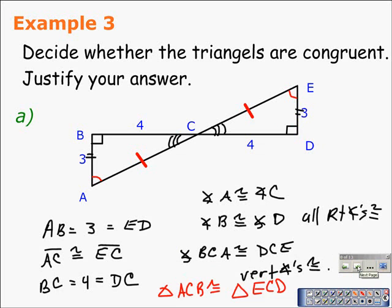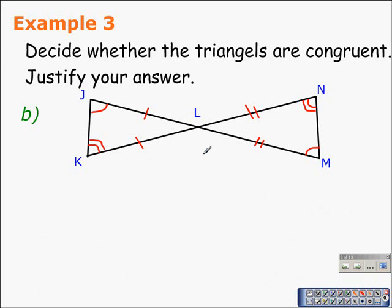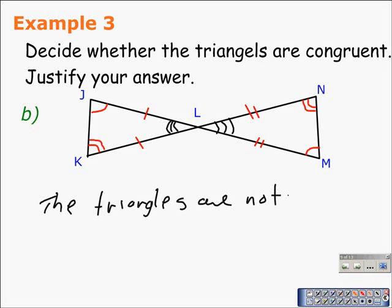In part B of example 3, we need to decide whether those triangles are congruent. We can confirm that three pairs of corresponding angles are congruent: angle J and angle M are marked congruent, angle N and angle K are marked congruent, and angles JLK and MLN are vertical angles and therefore congruent. However, the corresponding sides are not necessarily congruent, so we cannot conclude that the two triangles are congruent. This has been part 1 of lesson 4.1 on congruent figures — be sure to check out part 2, where we will prove triangles congruent through the definition of congruent triangles.